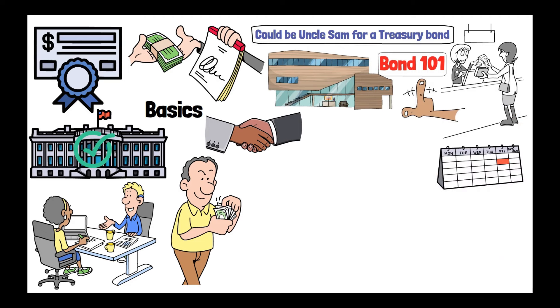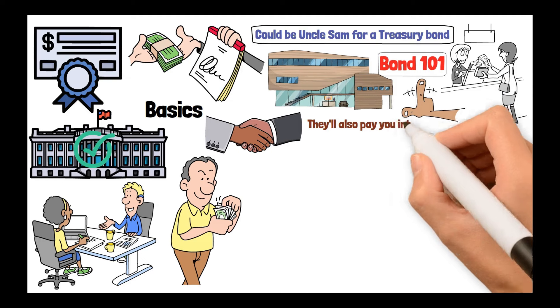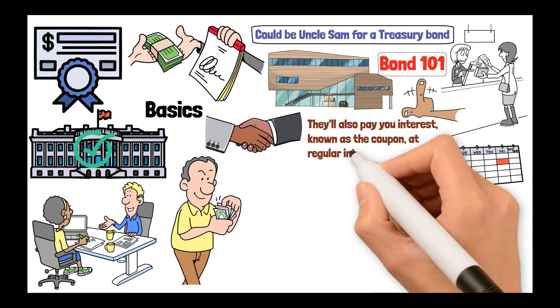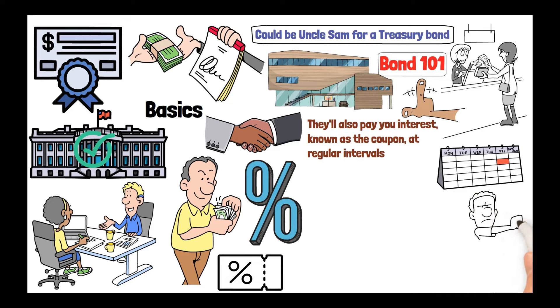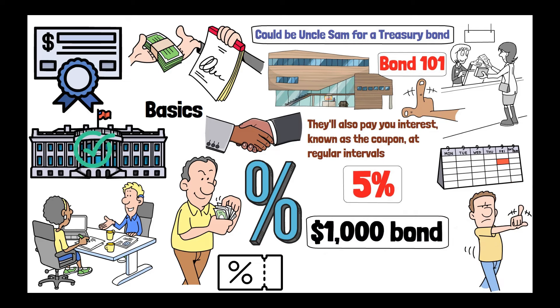But that's not all. They also pay you interest, known as the coupon, at regular intervals. All right, now for the fun part, the coupon rate, right? This is the interest rate the issuer agrees to pay you. It's fixed, which means it doesn't change even if the markets go topsy-turvy. So, if your bond has a 5% coupon rate on a $1,000 bond, you'll get 50 bucks a year. Ka-ching!